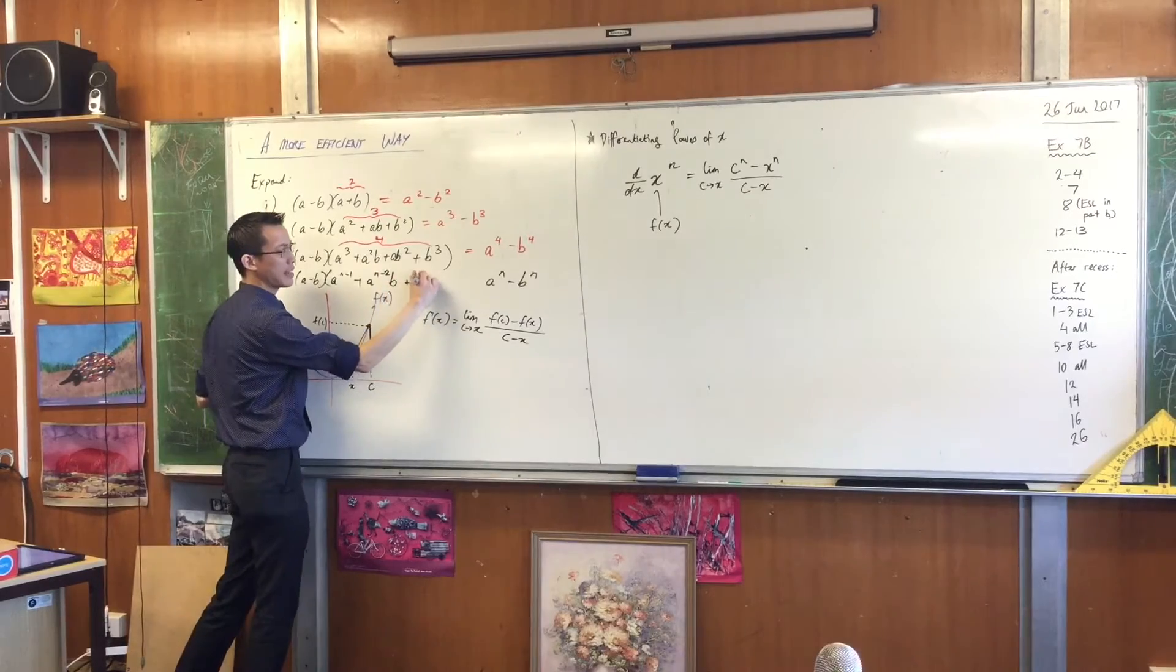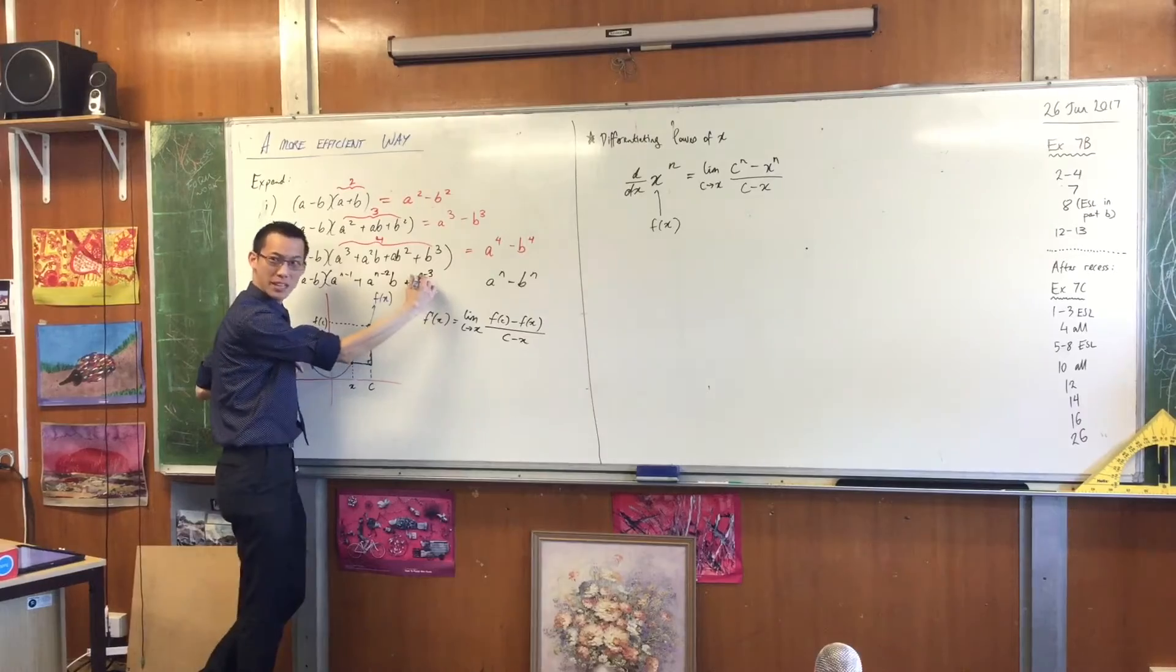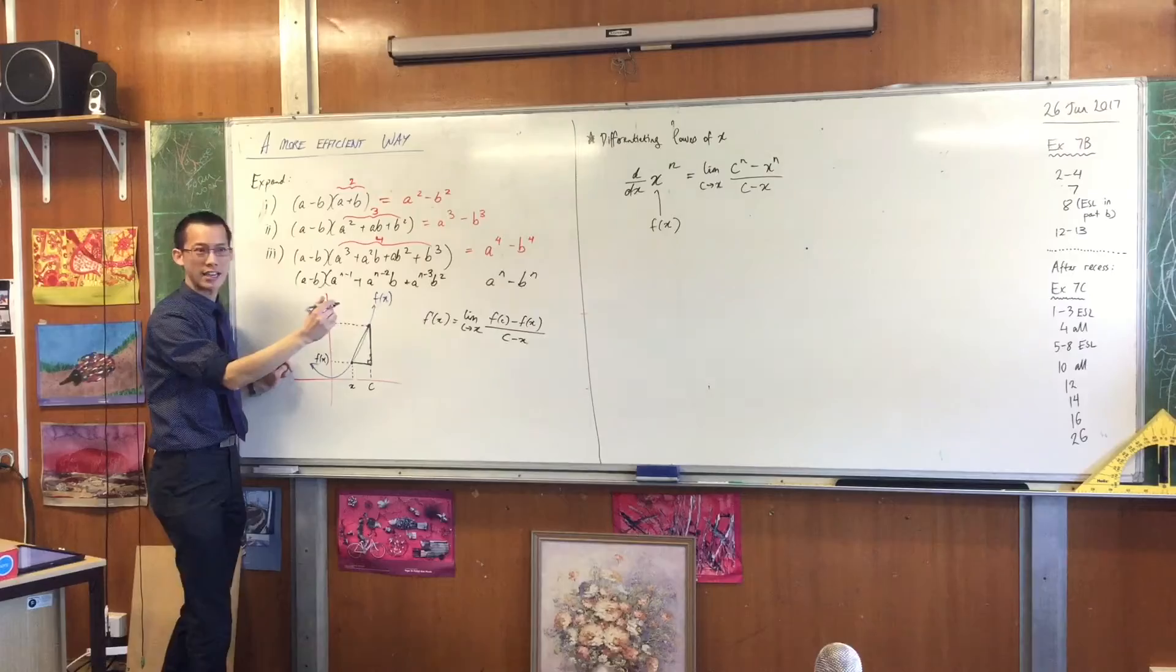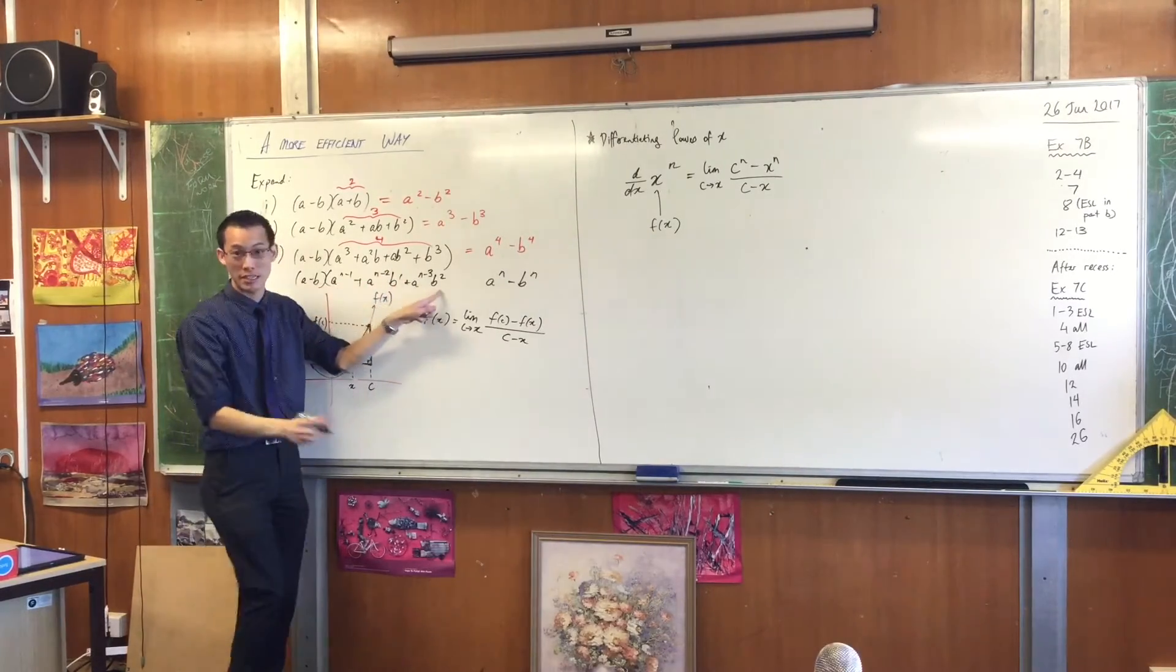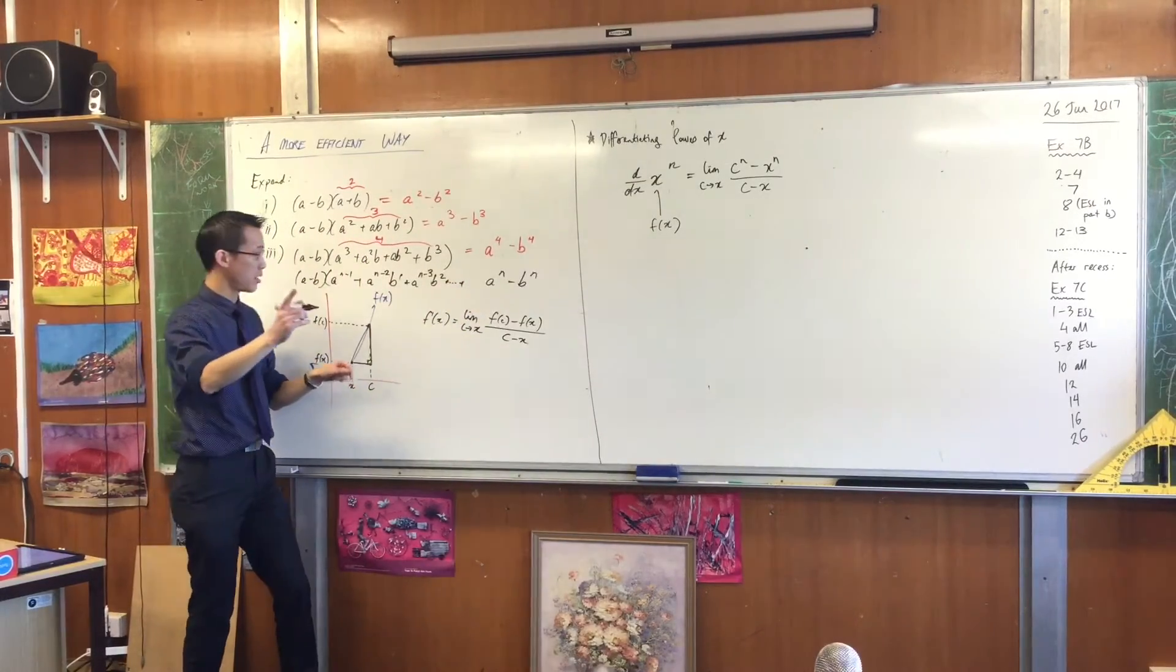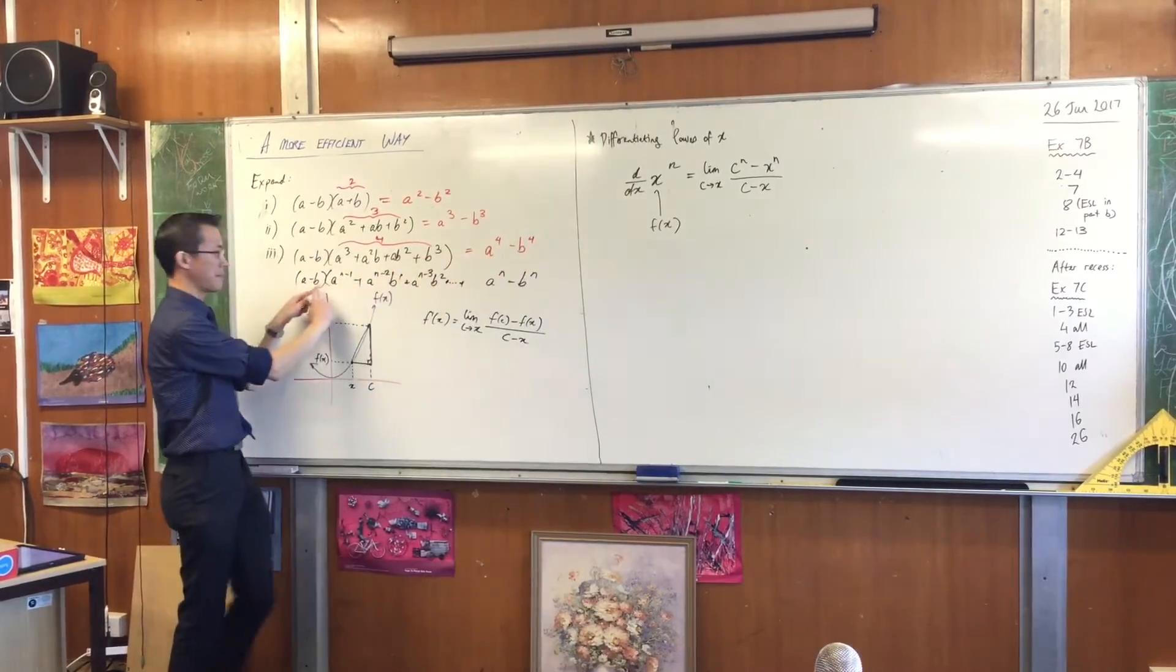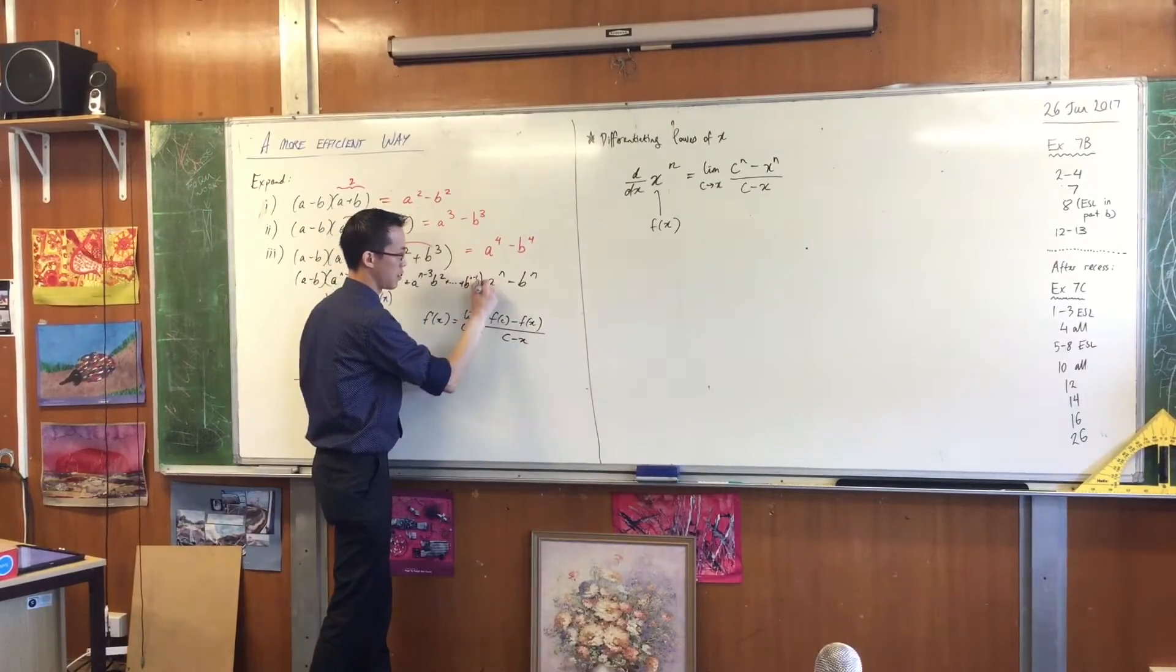So the next one will be A to the N minus two, because it's getting smaller, and then there will be a B. The next one will be A to the N minus three, because it's still getting smaller. How many Bs will there be now? There will be two, right? There are no Bs here. There's one B here. There's two Bs there. Do you agree? What will the very last term be? B to the N minus one, right? There's always one less, because it's got to multiply by this guy when it all expands out. B to the N minus one.